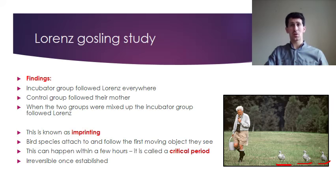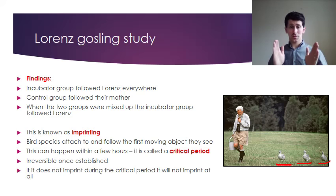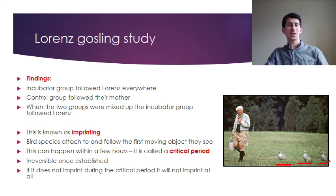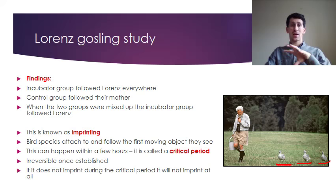Once imprinting happens it's irreversible — those geese would always follow Lorenz. If a bird doesn't imprint during the critical period of 12 to 17 hours, it will not imprint at all. Lorenz argued this was all due to survival: birds imprint on something to help them survive, providing protection and someone to feed them.